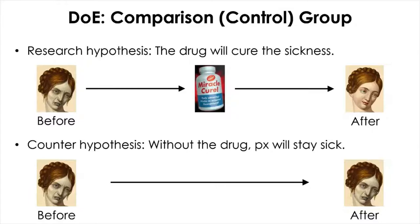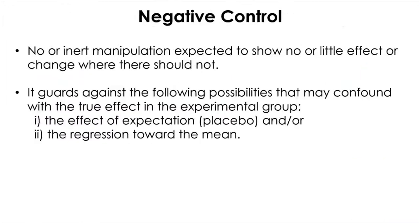The selection and use of proper controls are critical to ensure whether experimental results are valid. There are two types of control groups: positive or negative control groups, as shown in the counter hypothesis. The negative control group involves no manipulation, or you can include inert manipulation, and it is expected to show no or little effect. The negative control can guard against the effect of expectation and regression toward the mean that may confound with the true effect in the experimental group.